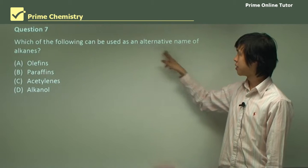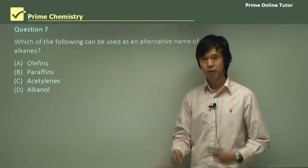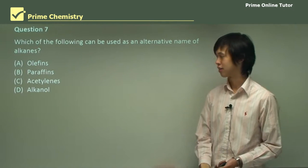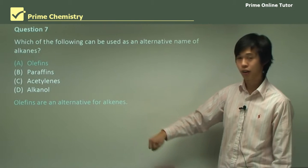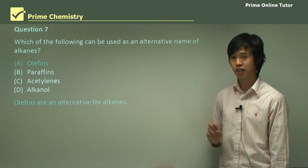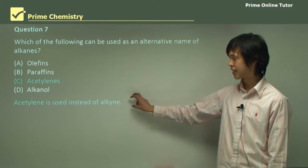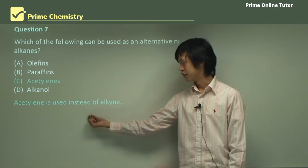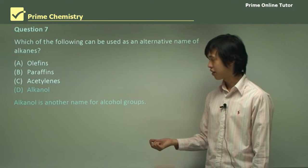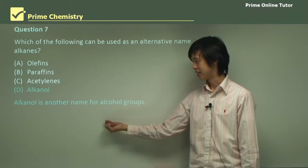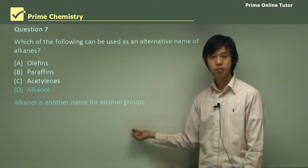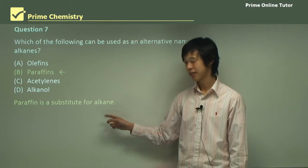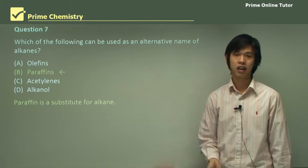Question: which of the following can be used as an alternative name for alkanes? Remembering the older naming structure — not the IUPAC naming. Olefins? No, olefins are used as an alternative for alkenes. Acetylene? No, that would be used instead of an alkyne. Alkanol? We didn't speak of that today — it's used for alcohol groups like ethanol. The correct answer is paraffins — paraffins is often substituted for alkane.